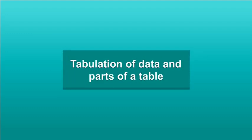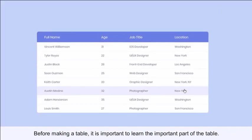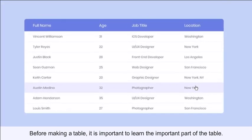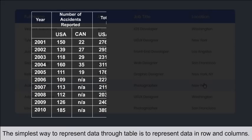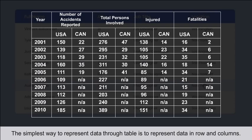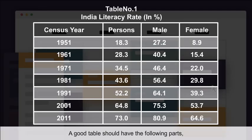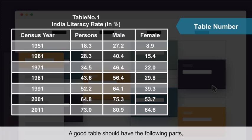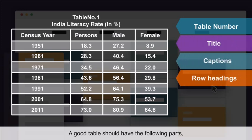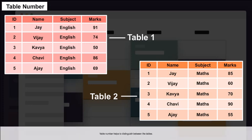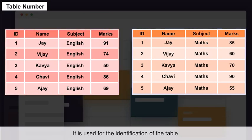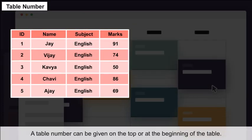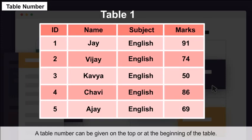Tabulation of Data and Parts of a Table: Before making a table, it is important to learn its key parts. The simplest way to represent data is in rows and columns. A good table should have the following parts: table number, title, captions, row headings, body of table, and source.